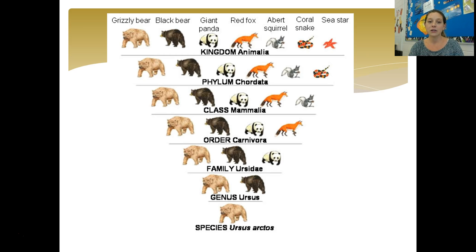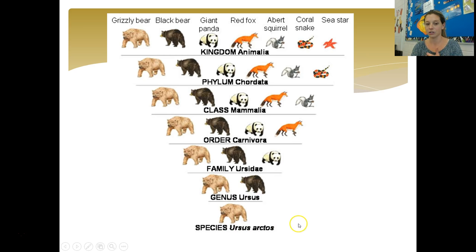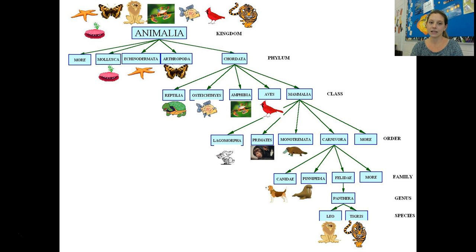Here's what this looks like visually. Kingdom Animalia includes all of these organisms, but as we go down the levels, phylum Chordata eliminates the sea star because chordata organisms have backbones. Class Mammalia gets rid of our snake. Moving further narrows it to carnivores, then bears, then Ursus bears, and eventually Ursus arctos — the polar bear. You can see how kingdom Animalia is very inclusive, while species is very specific. The scientific name of a lion is Panthera leo — genus Panthera, species identifier leo.